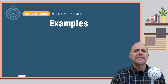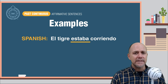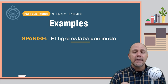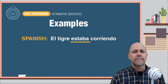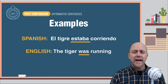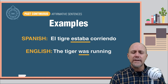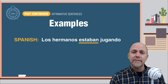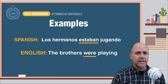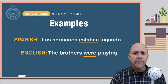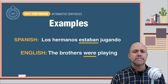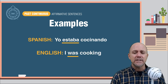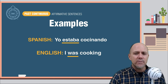Here are some examples. Spanish: El tigre estaba corriendo. English: The tiger was running. Spanish: Los hermanos estaban jugando. English: The brothers were playing. Spanish: Yo estaba cocinando. English: I was cooking.